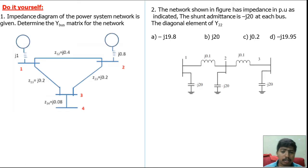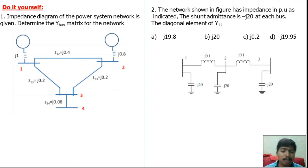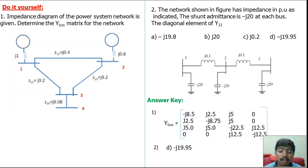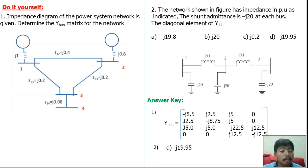Now do it yourself — two questions are given. You may use both methods: direct inspection and node analysis, and check whether both answers are the same. The second question is from the GATE 2005 examination. The answer key: for the first one this value, and for the second one option D. Check your answer using both methods.